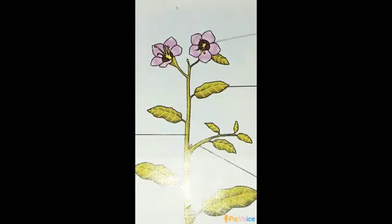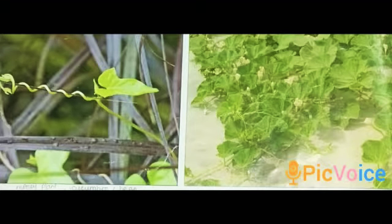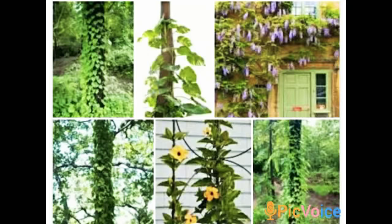The stem bears branches, leaves, flowers, and fruit, and it supports the plant. Based on the size and shape of the stem, plants are of different types. Some plants have weak stems, some have soft and thin stems, and some have strong stems. Creepers and climbers have very weak stems. They have special stems, leaves, or roots that cling to support and help the plant climb. Plants with weak stems that need support to climb are called climbers. Climbers have special stems to help the plant climb.